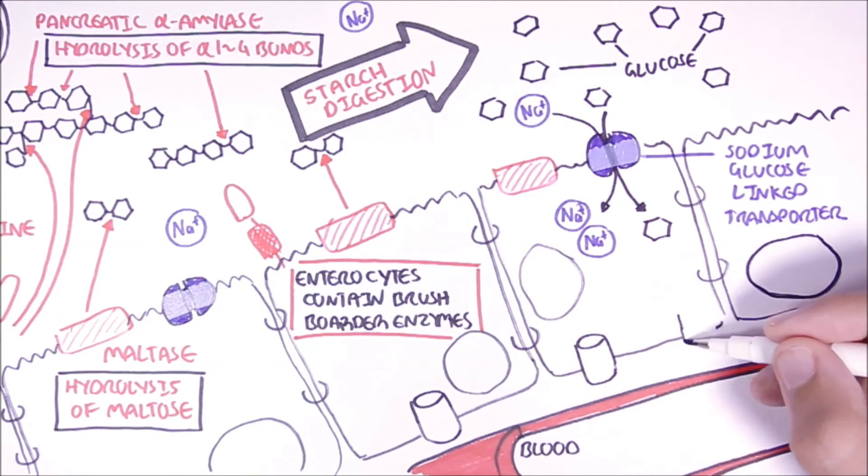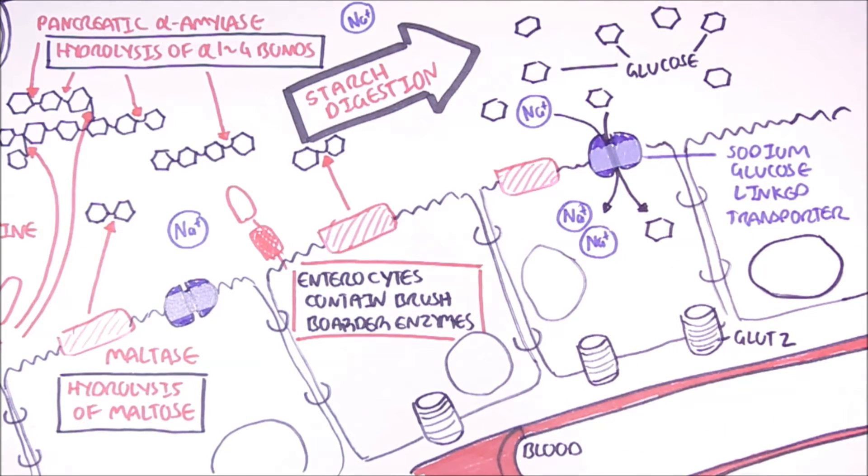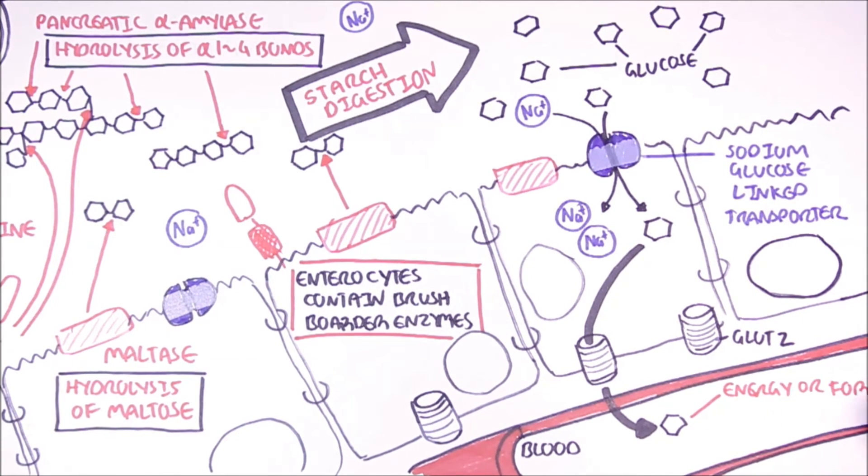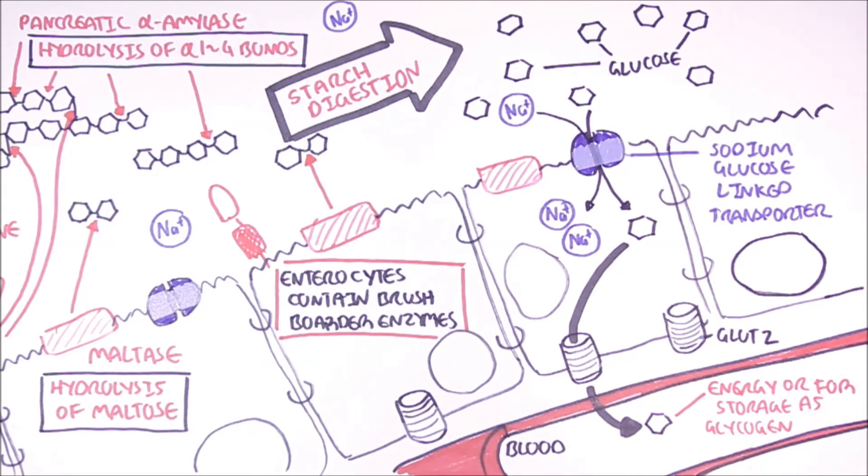Once glucose is within the cell, it can be reabsorbed by the bloodstream through a GLUT2 transporter. The GLUT2 transporter is found on the basal surface of the enterocyte. When glucose is in the bloodstream, it will increase blood glucose levels. The glucose can be used as energy by tissues or it can be stored away in the liver as glycogen.